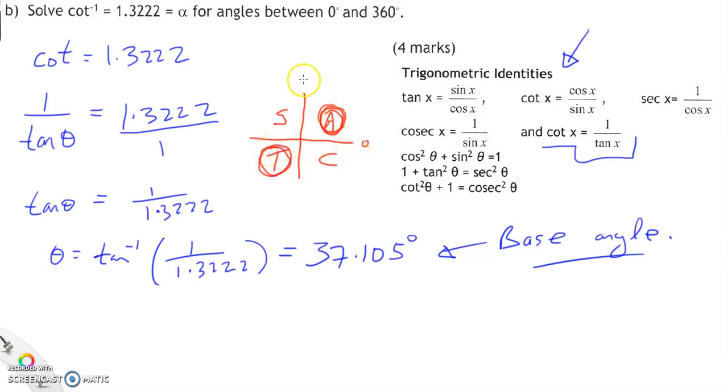So it's 0, 90, 180, and 270, and back to 360 here. So we have an angle here at 37, and then we have to get another angle down here which is going to be 180 plus the 37. So theta 2 equals 180 plus our base angle of 37.105, and that will give us 217.105 degrees.